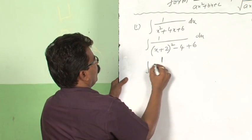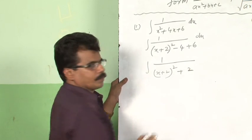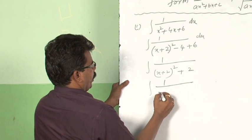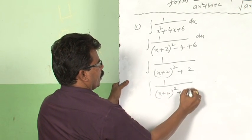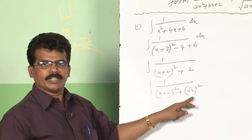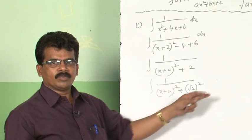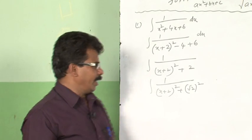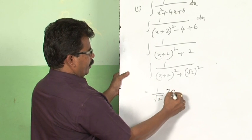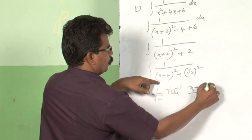Now it is not yet in known form. So this can be written as integral 1 by x plus 2 whole square plus 2, where 2 can be written as root 2 whole square, which is in the form of integral 1 by x square plus a square. Recall the formula: integral 1 by x square plus a square is 1 by a times tan inverse x by a.